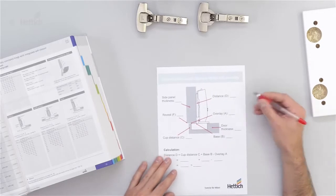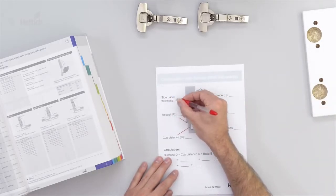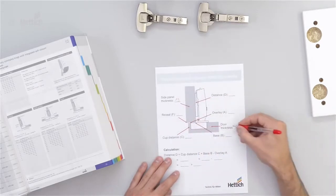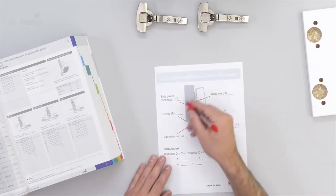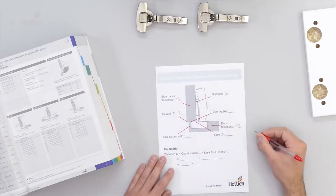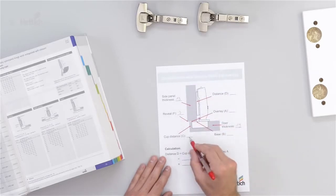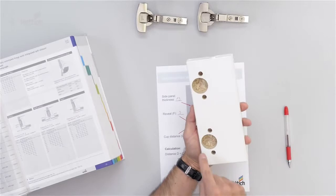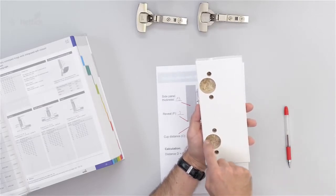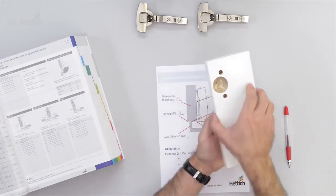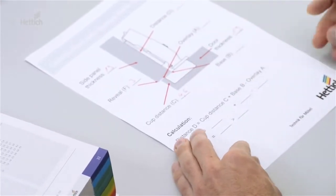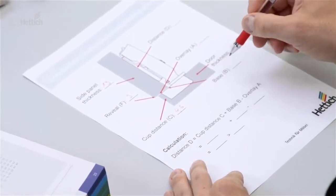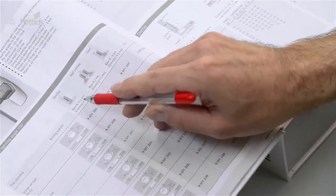In this example we calculate with a side panel thickness of 19 mm and a door thickness also of 19 mm, and we say the reveal is 3 mm. The cup distance C — which is the distance between the hinge cup drilling and the edge of the door — is 4.5 mm in this example. The base B, as shown in the catalog, is 12.5 mm.